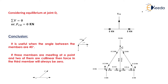The last remaining member force is FCD. At joint D, two equal and opposite horizontal forces of 5 kN are acting — AD and BD — which balance each other. Since there are no vertical forces acting at joint D, considering vertical equilibrium gives FCD = 0 kN.